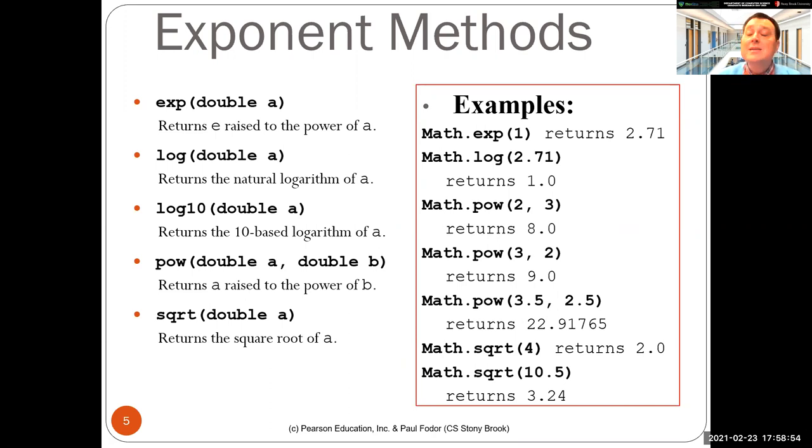Next methods are the exponent methods. So exponent takes a double and returns e to the power a. So math dot exponent of one is 2.71. Logarithm is natural logarithm of the input, the double input. So math dot logarithm of 2.71 is one.